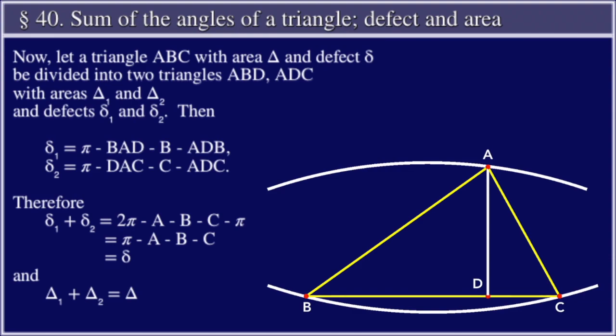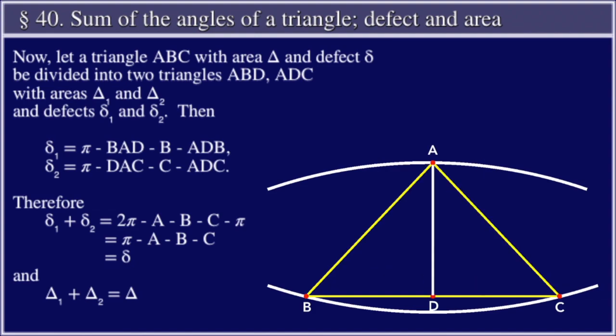Therefore δ₁ plus δ₂ is equal to 2π minus A minus B minus C minus π, which is equal to π minus A minus B minus C, which is equal to δ. And Δ₁ plus Δ₂ is equal to Δ.